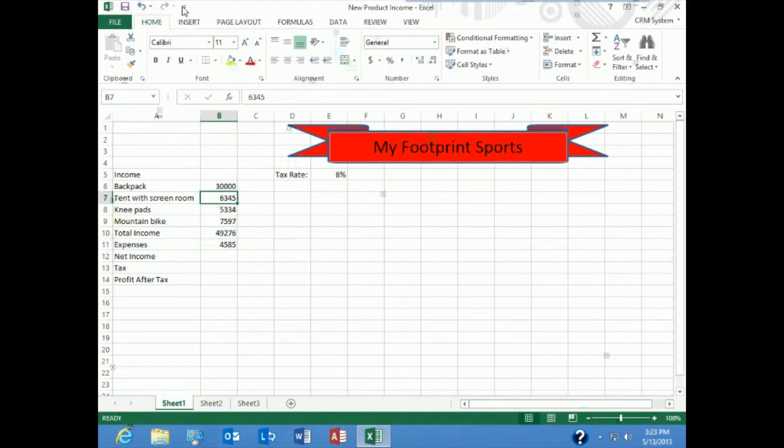I'm going to go up here on my quick toolbar and undo that. Okay, so my total income is $22,162. My expenses are hard-coded as a value of $4,585. My income, of course, would be my income minus my expenses, so I need a formula there. Start with the equal sign. Click on B10, subtract, click on B11, press enter, and there is my net income.